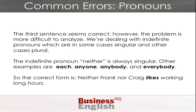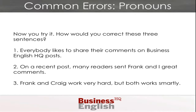So the correct sentence is: Neither Frank nor Craig likes working long hours. With 'neither/nor,' the verb takes the form of the second noun. So 'Craig likes' — you can get rid of the front part. If you say 'neither Frank nor the birds,' it would be 'like' (plural). But 'neither the birds nor Frank' would be 'likes.' The verb chooses its singularity or plurality based on the noun closest to it.